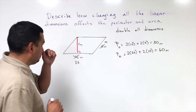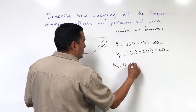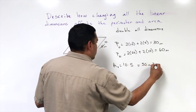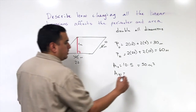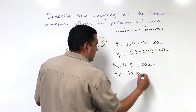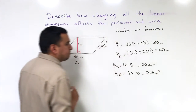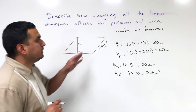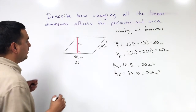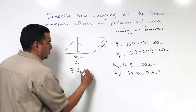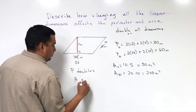Looking at the area, the original area is 10 times 5, which is 50 meters squared. If I double my dimensions, I do 20 times 10, which gives me 200 meters squared. So when I change all my dimensions by a factor of 2, my perimeter doubles and my area quadruples.